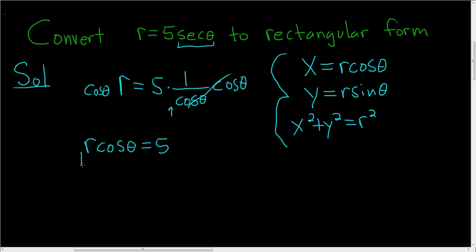And we know something about r cosine theta that's just x. So x is equal to 5. And that's it. That's the final answer. I hope this helps.